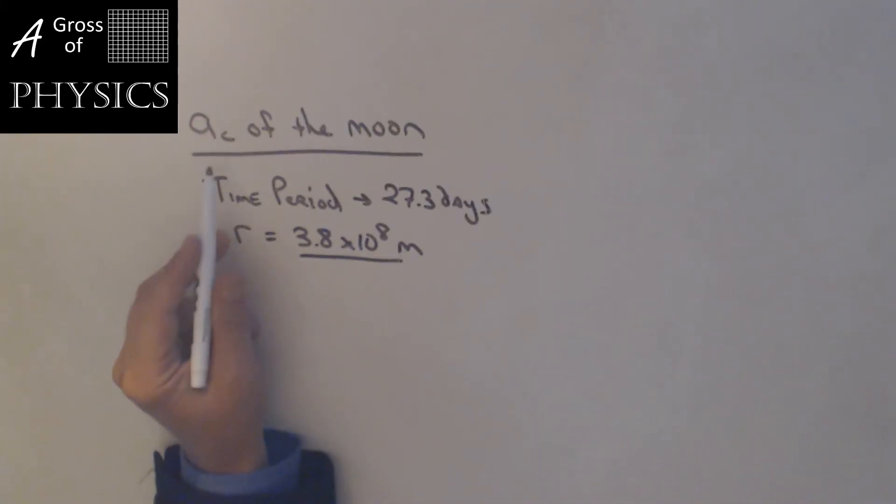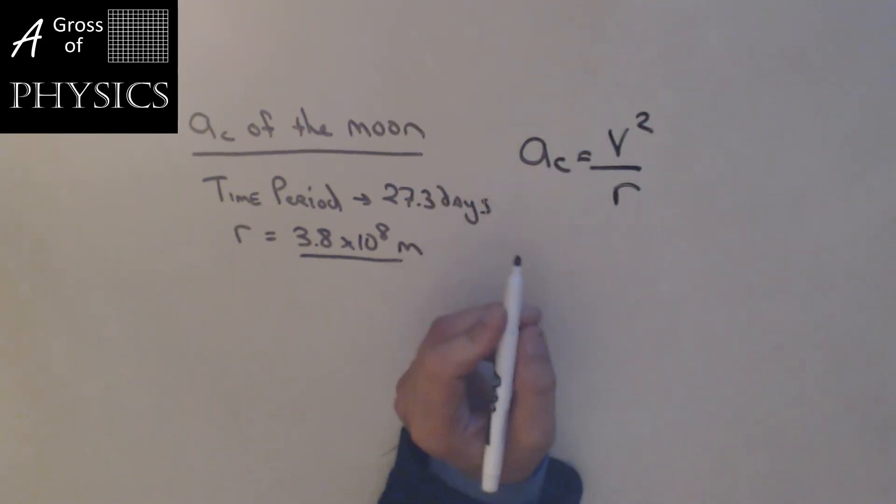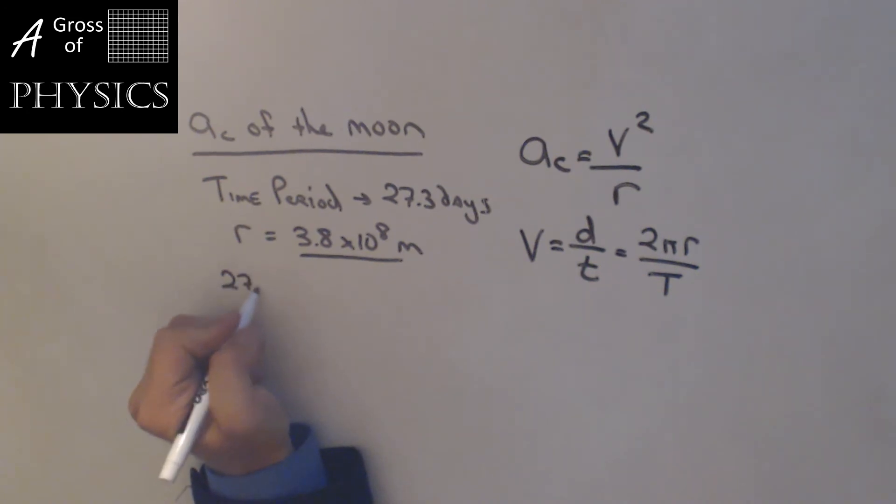The next problem we're going to look at is finding the centripetal acceleration of the moon. Now what I had to do is look up a few pieces of information. I found the time period to be 27.3 days, and the radius of orbit is 3.8 times 10 to the 8 meters, and that's the distance from the earth to the moon. As the moon travels, it creates a radius around the earth in terms of that distance. In order to find centripetal acceleration, we do v squared over r. The radius is already given, but we need to find the velocity. We're going to assume that the orbit is effectively circular. So when we do v equals d over t to find the speed, we need the circumference, which is 2 pi r, over the time period. We already have r again, and we need t. But the problem with t is it's in days, so we need to convert.